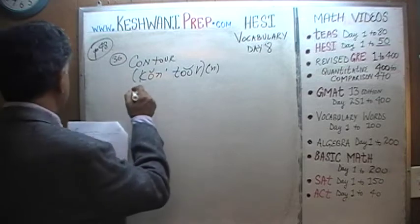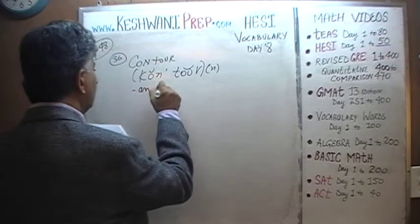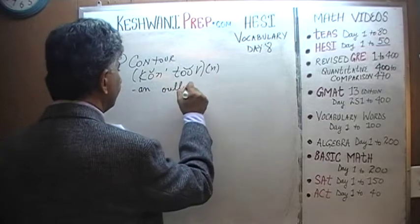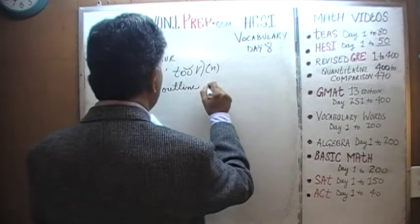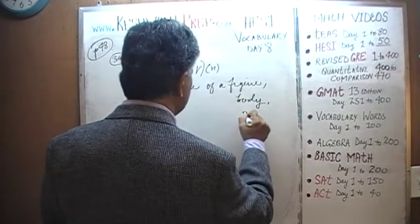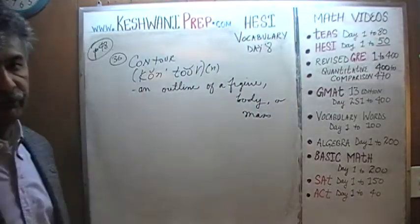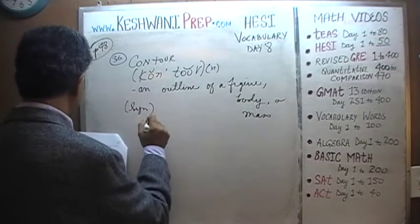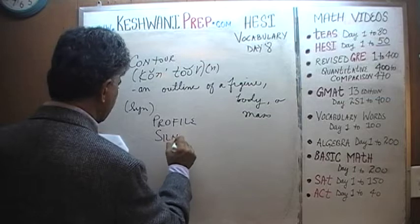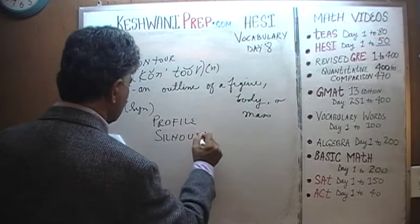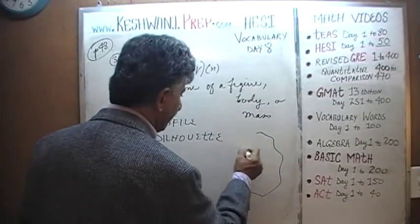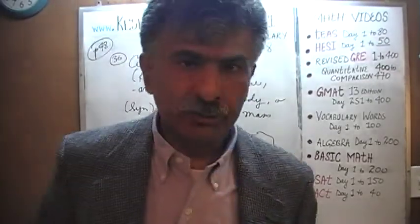Contour — what does contour mean? Contour is an outline. It is an outline of a figure, or a body, or a mass. The synonyms of contour would be: profile or silhouette. So an outline of a body or a figure — whatever the outline might be — that's called the contour, the silhouette, the profile.